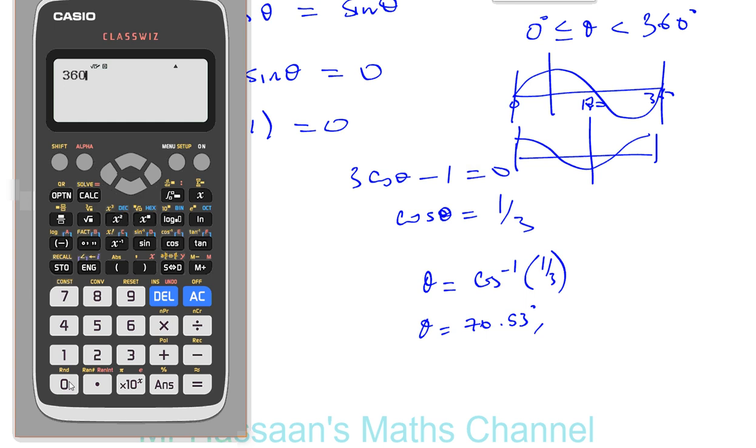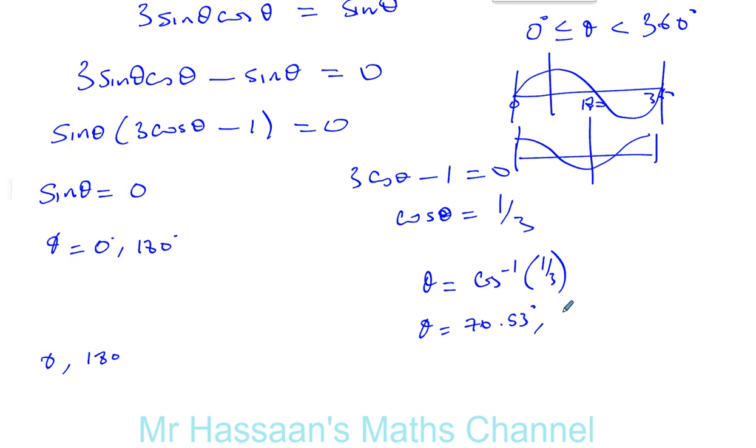So you do 360 minus our answer. That gives you 289.47. 289.47. And remember, it repeats every 360 degrees. So 360 more and less than both of these values will give you all the other solutions. They are all outside of the range.